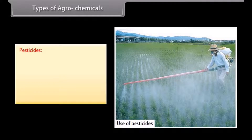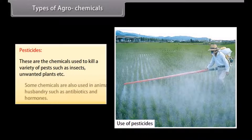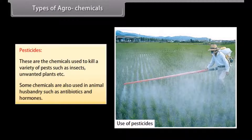Pesticides are chemicals used to kill a variety of pests such as insects, unwanted plants, etc. Some chemicals are also used in animal husbandry such as antibiotics and hormones.